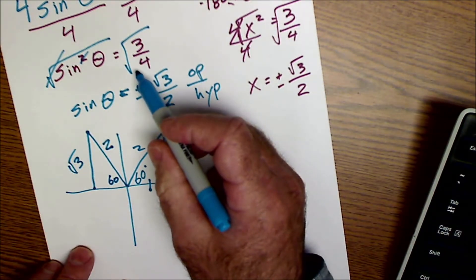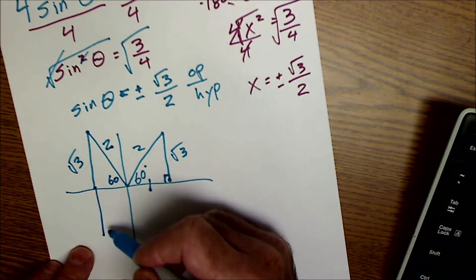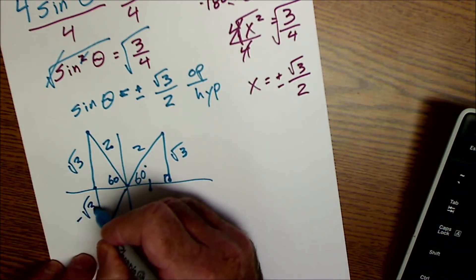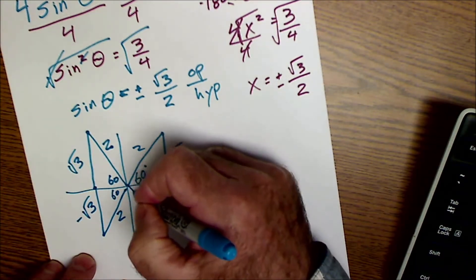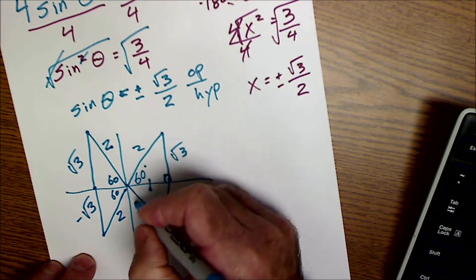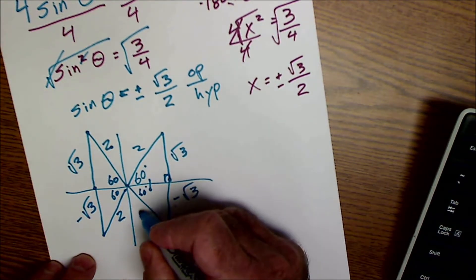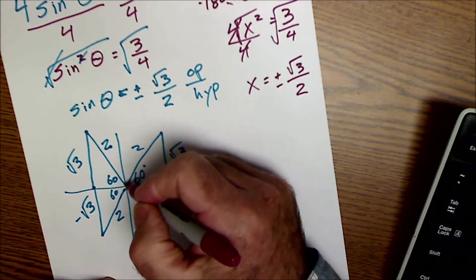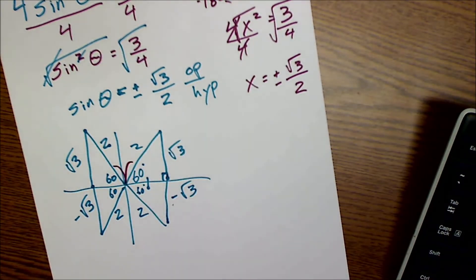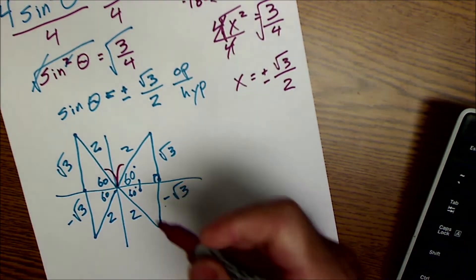Because it's the square root, and I have a positive and negative, it'll also happen down here, where the opposite's negative root 3, the hypotenuse is 2. The reference is 60. Or down here, with the reference is 60, where the opposite's negative root 3, hypotenuse is 2. So I'm going to actually have 4 reference triangles right there. Looks like a little butterfly. So I'm going to have 4 solutions in 0 to 360.